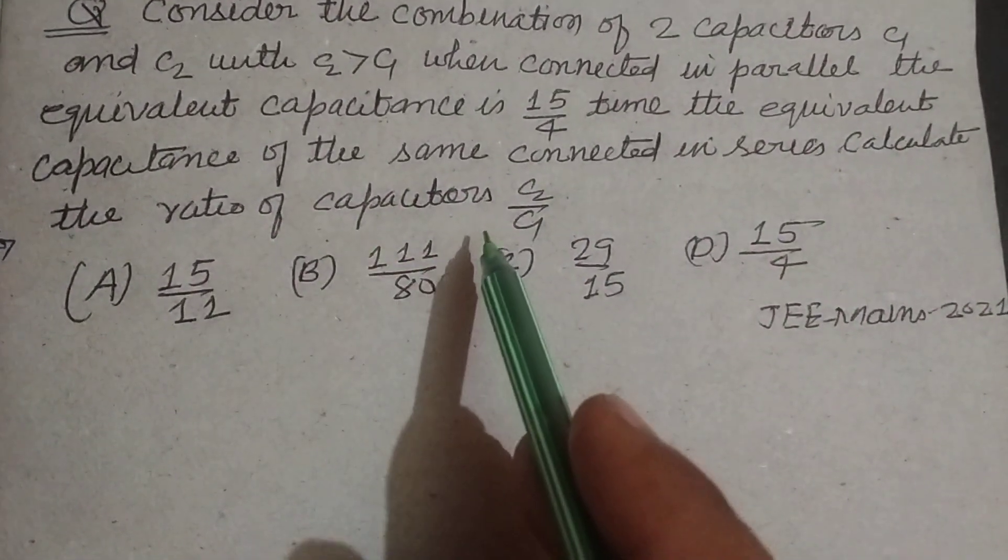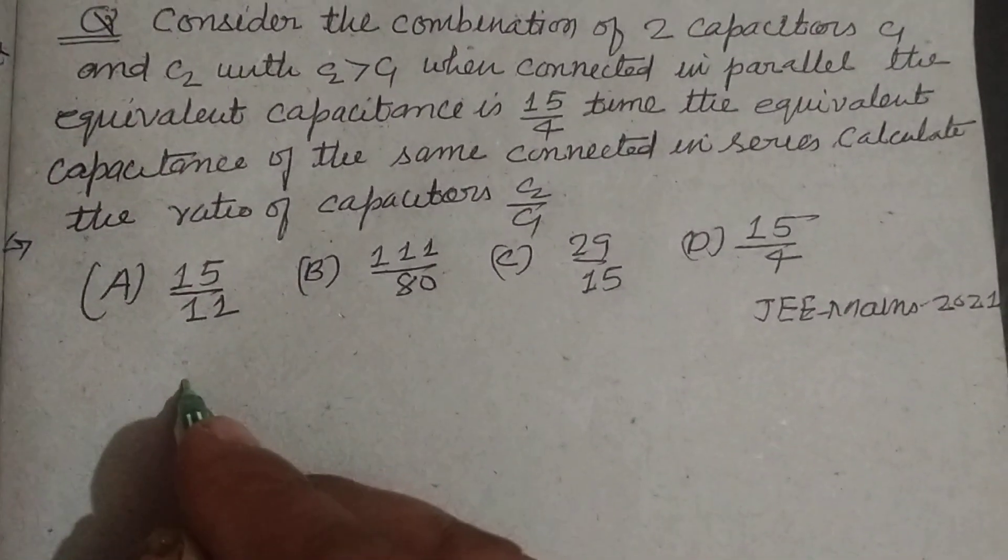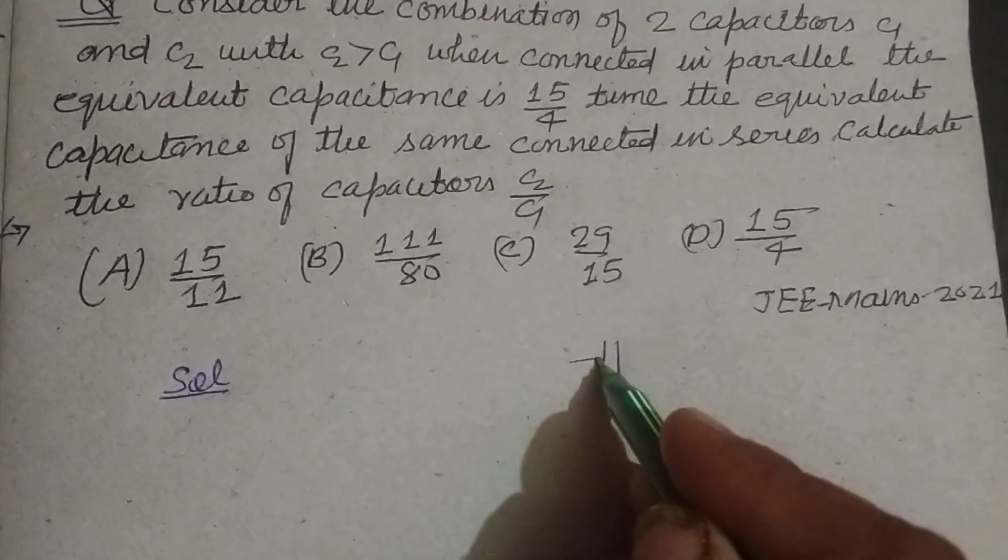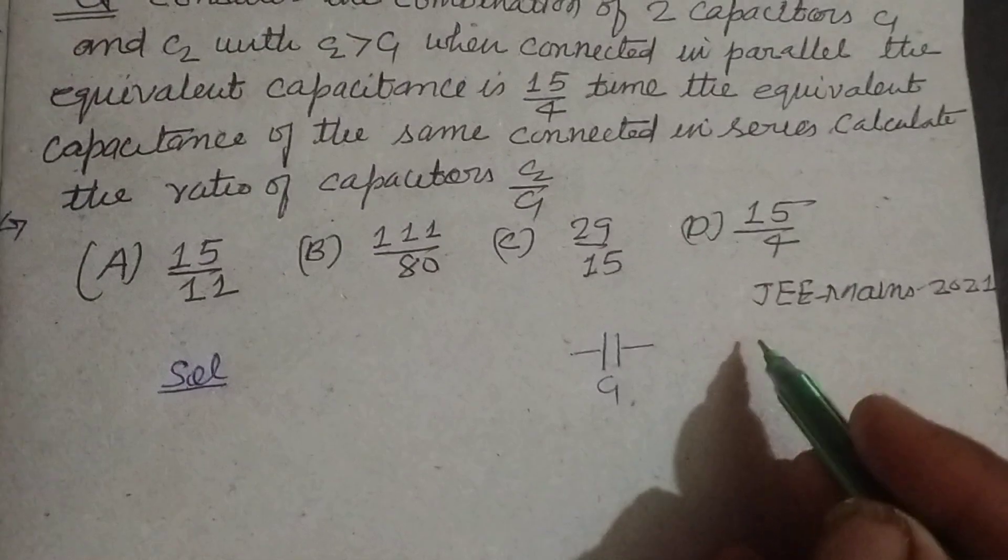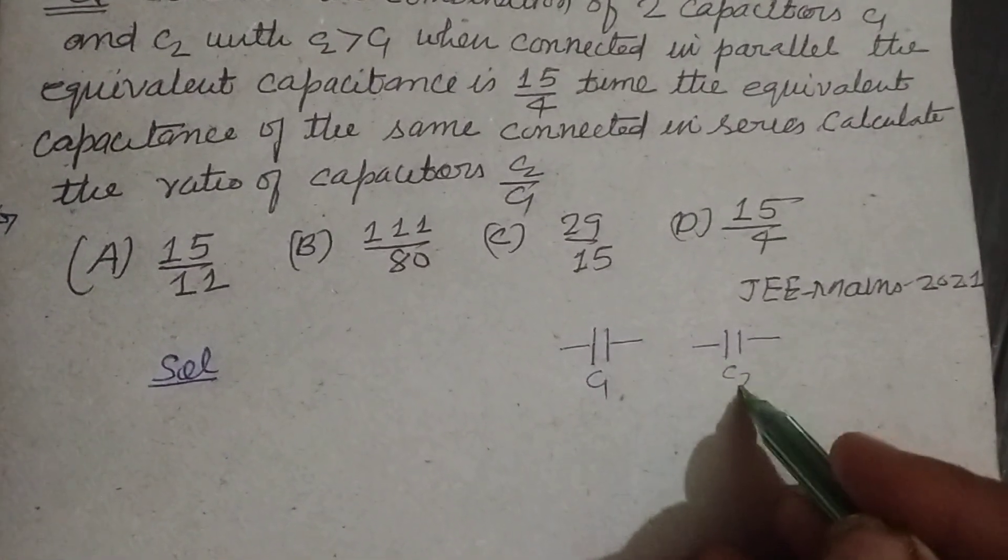Calculate the ratio of the capacitors C2 over C1. So here are two capacitors, this is one having C1 capacitance and this is the second which has capacitance C2.